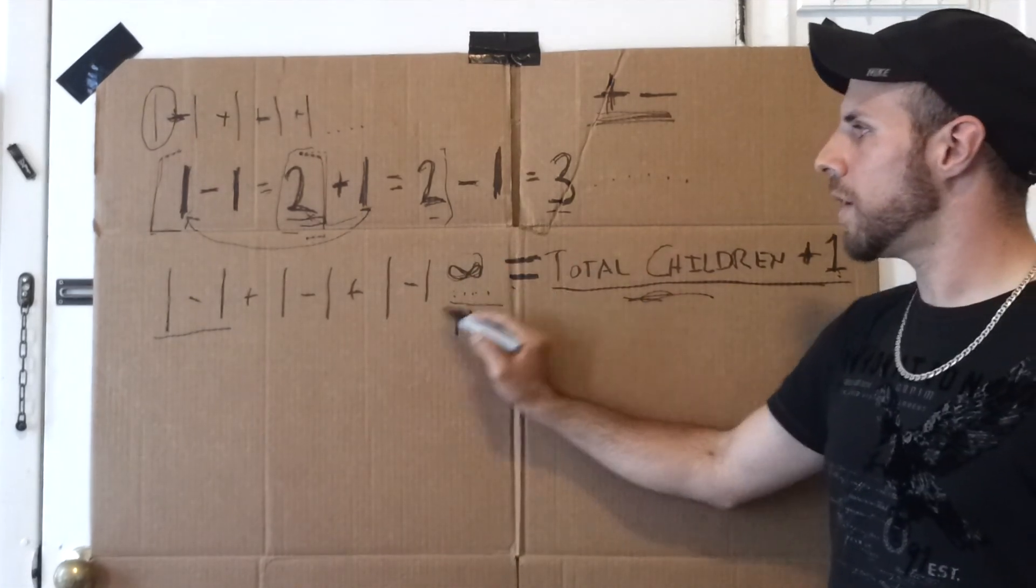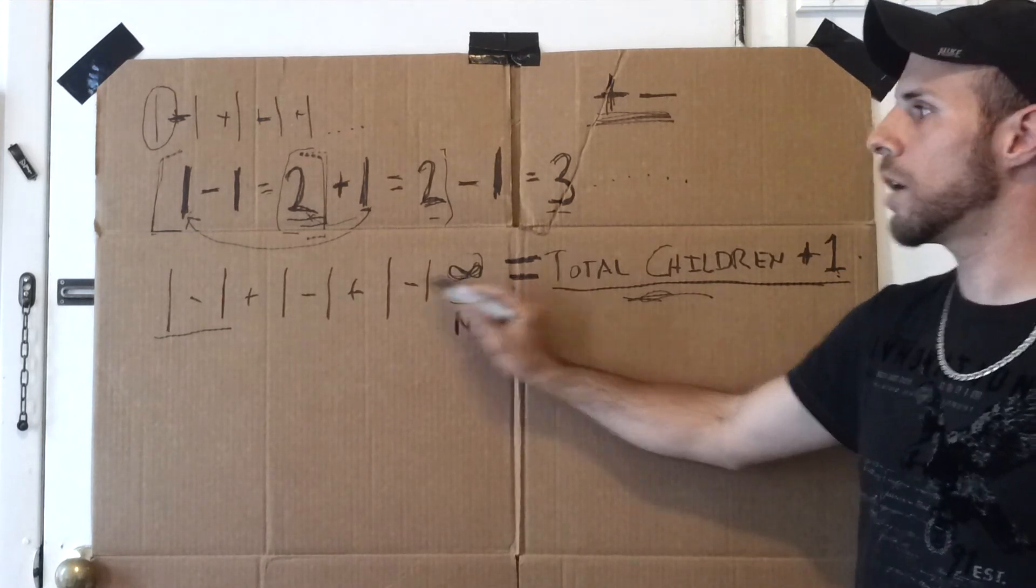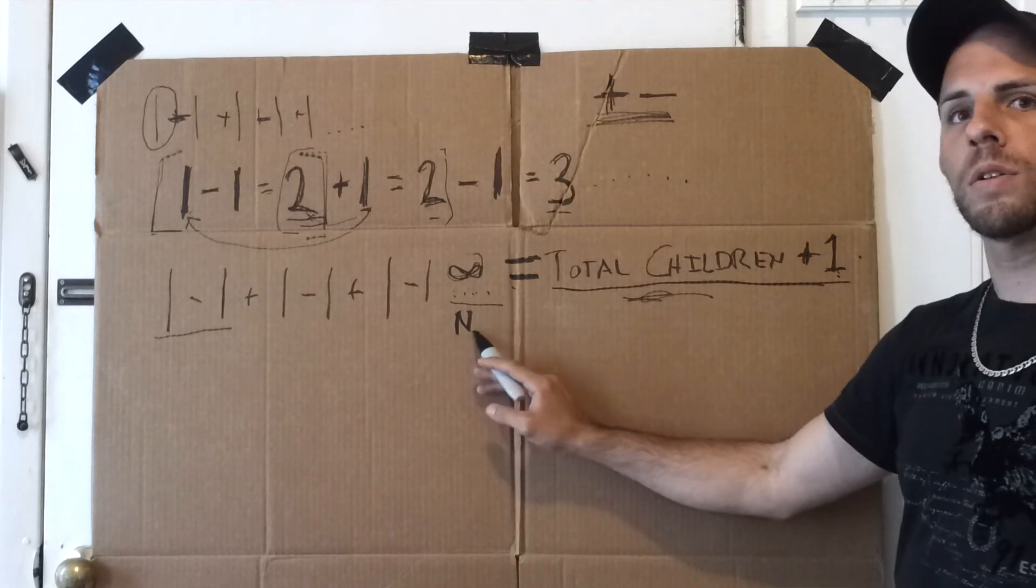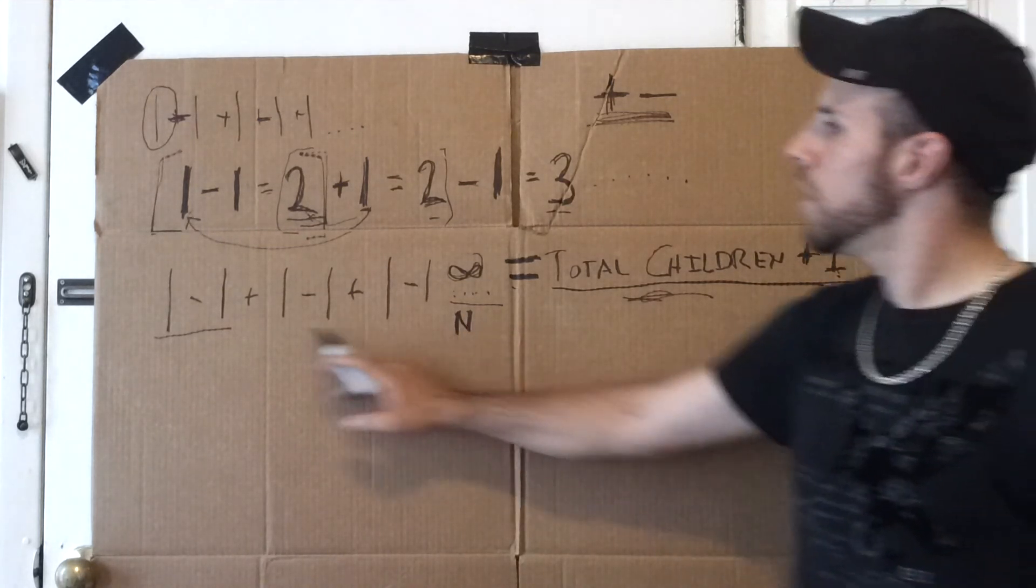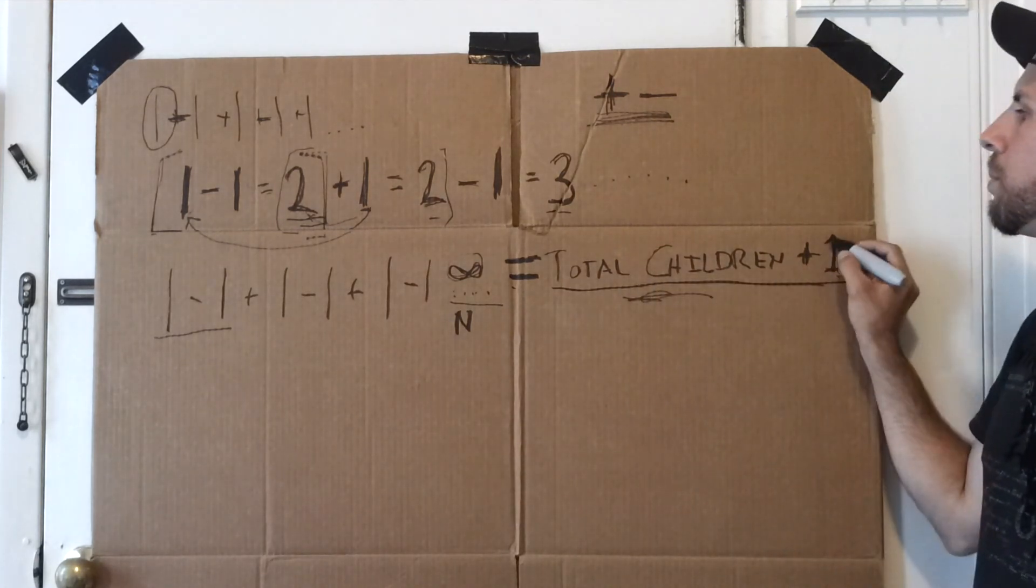It goes on into infinity, or any number that you want it to be. It can go on into infinity, or it can go on to say that she has 100 children, 10 children, 15, 1, 2 children. So 1 minus 1 plus 1 is the total number of children plus the mother.